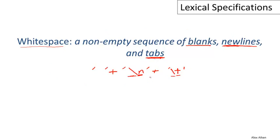To finish off our definition: this gives us one-character white space, and then we want a non-empty sequence of such things. So we wrap the whole union in parentheses and put a plus on it, and that gets us what we want.